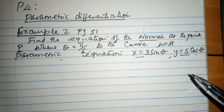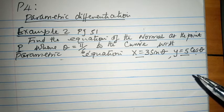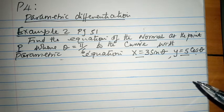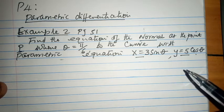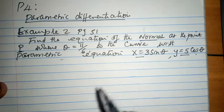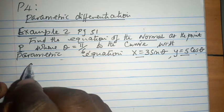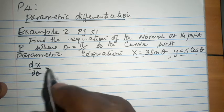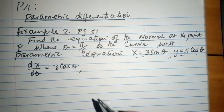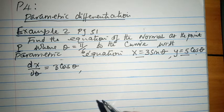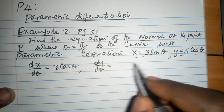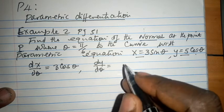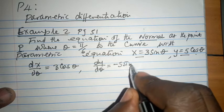The normal to anything is the line that is perpendicular to the original line, so we have the property that the product of the gradients gives us negative 1. We must calculate the gradient of the curve at point P using the parametric equations, so dx/dθ is 3 cos theta, because the differential of sin theta is cos theta. And dy/dθ is minus 5 sin theta, because the differential of cos theta is negative sin theta. Those are the two differentials.